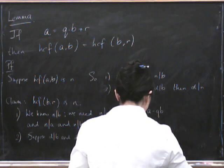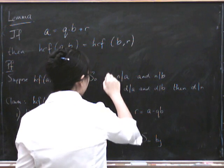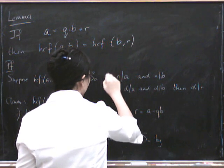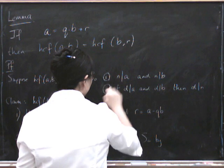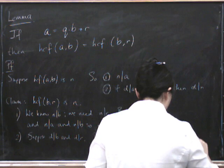So by, I should call these conditions something really. So let's call this condition 1 with a circle around it. So by 2, D divides N.